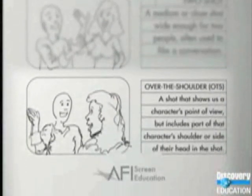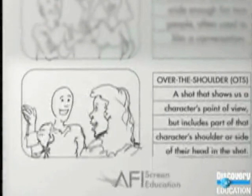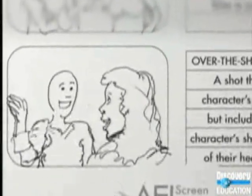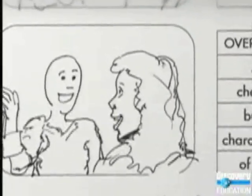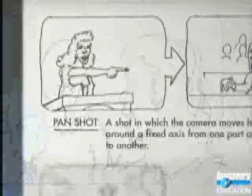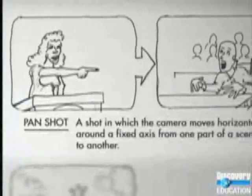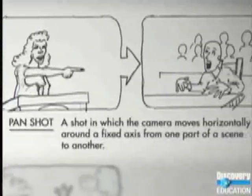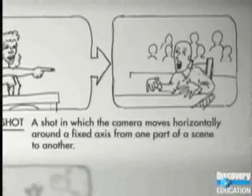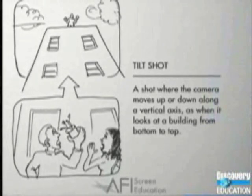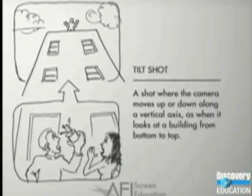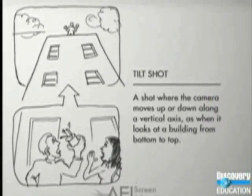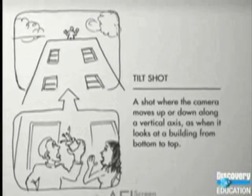A two shot is a medium or close shot that's wide enough for two people. Another version of the two shot is the over-the-shoulder, in which you show the character's perspective on a scene but include part of that character in the shot. A pan shot is one in which the camera moves horizontally around a fixed point from one part of the scene to another, and a tilt shot is a shot in which the camera moves up or down along a vertical axis.